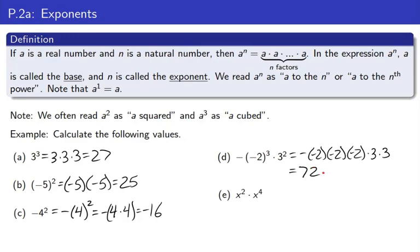And then this one. Now, you might know a rule for this, but I don't want to use the rule yet. Let's just be careful. What does it mean when I say x squared? It means x times x, doesn't it? x to the 4th means x times itself 4 times. Count them up. How many are there? There's 6. So, this is x to the 6th.